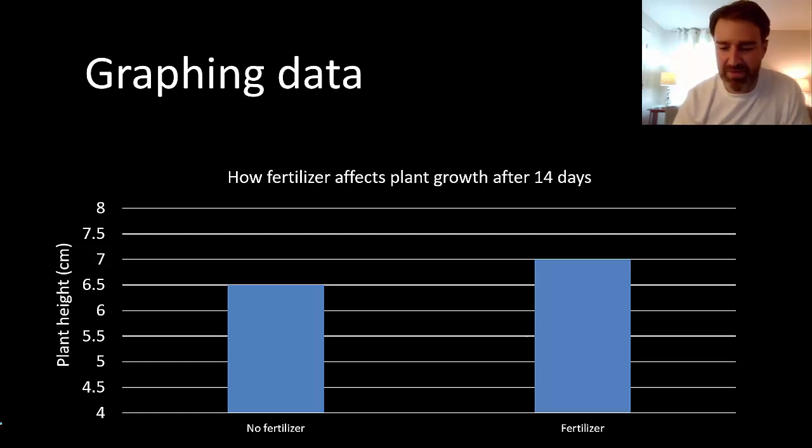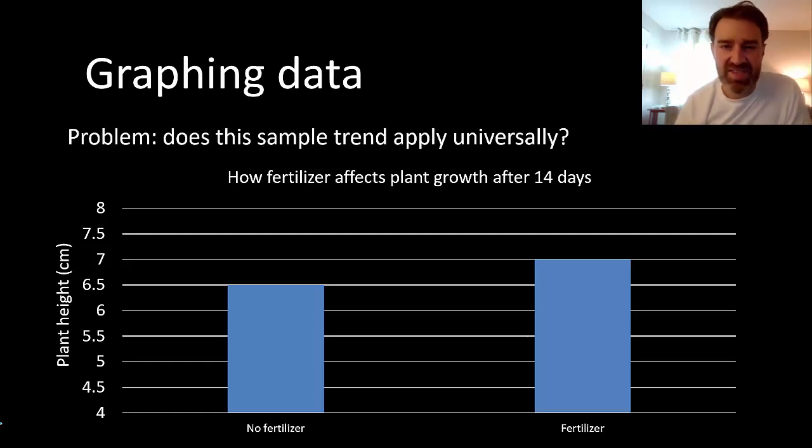In a sense what we've really only established is that in this sample group of plants fertilizer appeared to make the plants grow taller. We have the problem of universality. Does this sample trend really apply universally to all of the plants of this species? And that's what SEM is really going to try to help us answer.